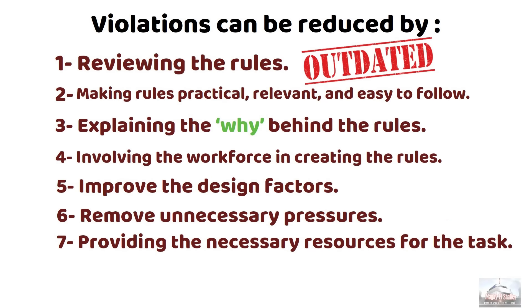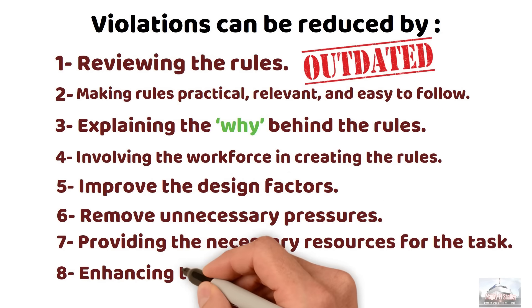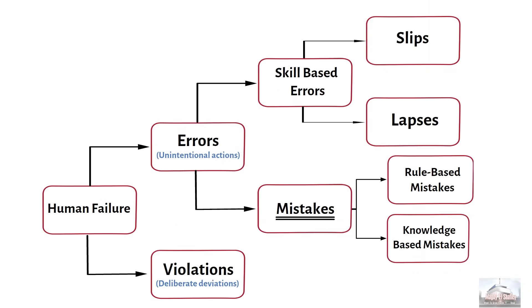Providing the necessary resources for the task, including adequate manpower, proper tools and equipment. And finally, enhancing the job planning. These are the two main categories of human failures. And after understanding these types of failures, we can say that there are two approaches looking at the human failure.